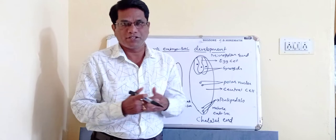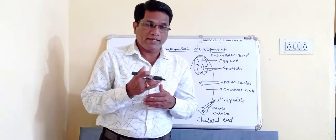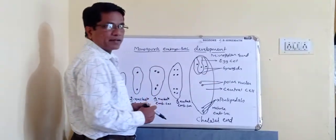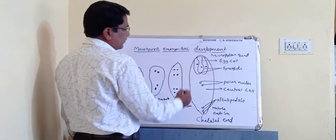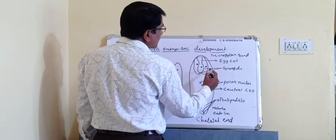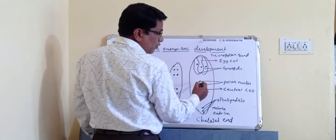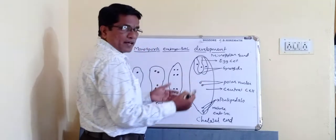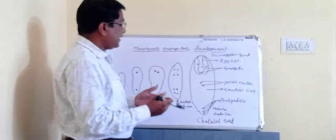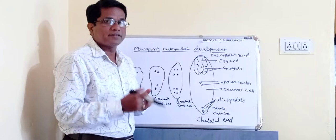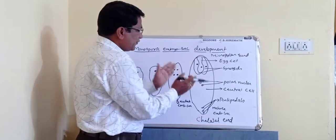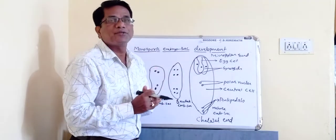The eight-nucleated embryo sac later develops into the mature embryo sac. In the diagram of this mature embryo sac you can see: the egg cell, two synergid cells, and the two polar nuclei located in the central cell. There are also three antipodal cells. So the mature embryo sac has one egg cell, two synergids, one central cell with two polar nuclei, and three antipodal cells.